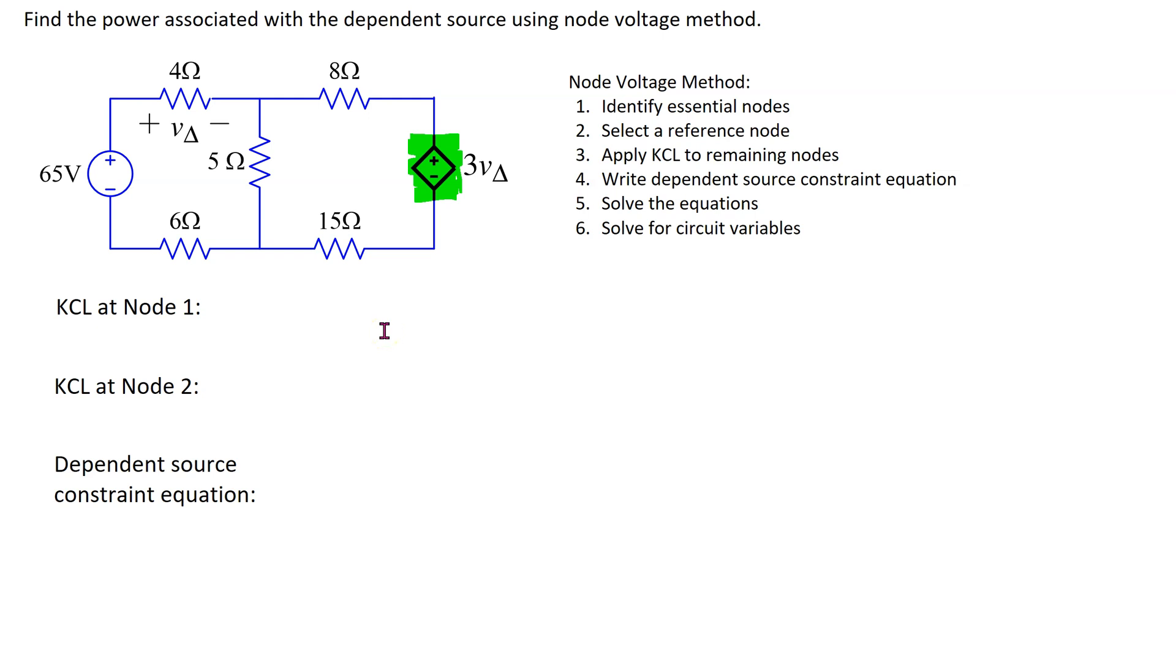In this example, we are going to apply node voltage method to a circuit containing a voltage controlled voltage source. In this given circuit, we have one ideal independent voltage source and this circuit component is the dependent source.